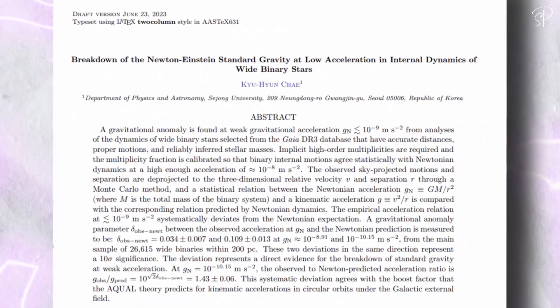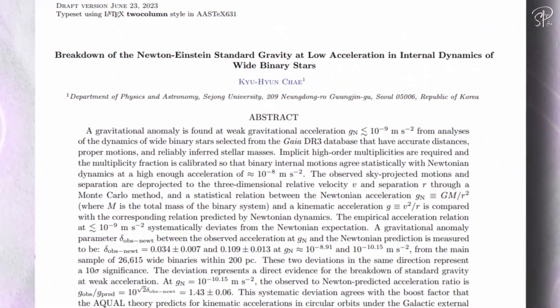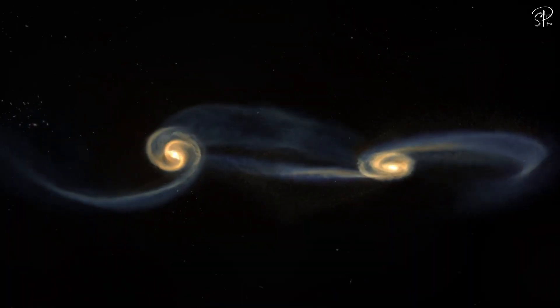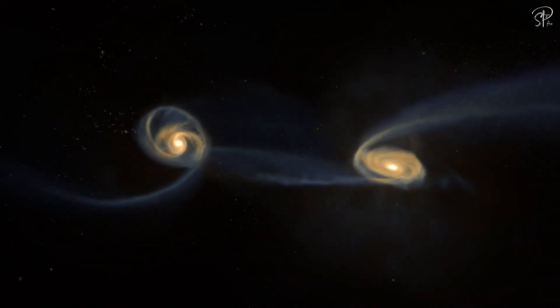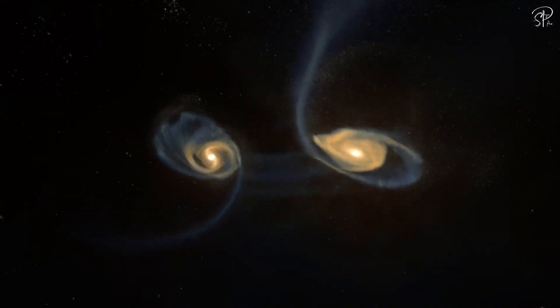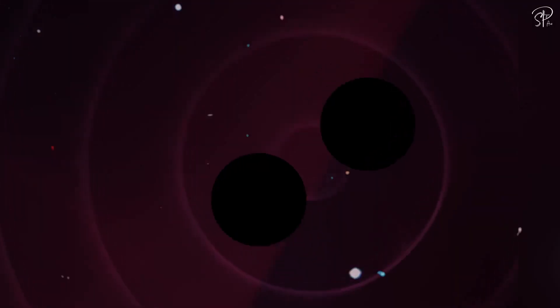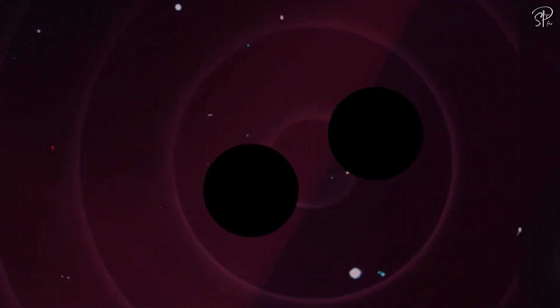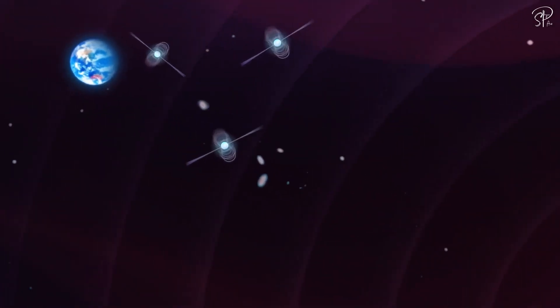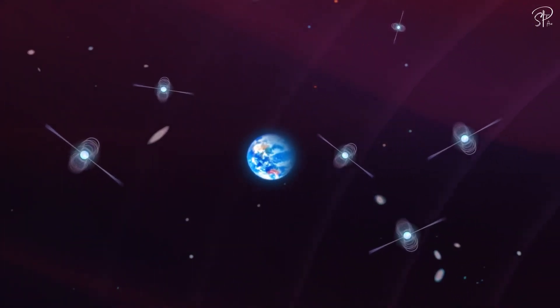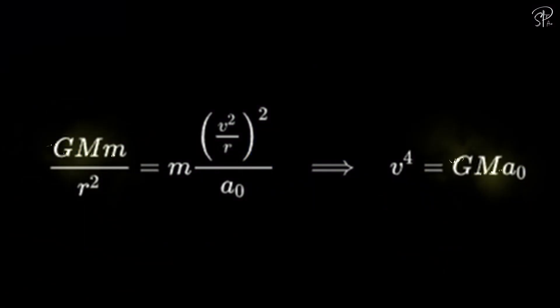But recently, a paper was published by a fellow scientist from Seyong University of South Korea that claims to have found strong evidence for an alternate theory of gravity called MOND. One that doesn't need dark matter to explain observations with the universe and instead just tweaks the equation for gravity slightly.